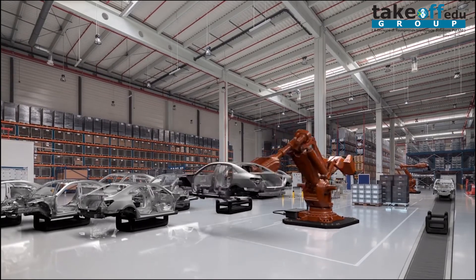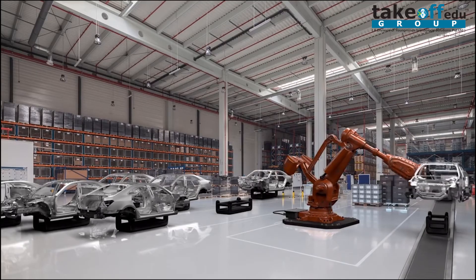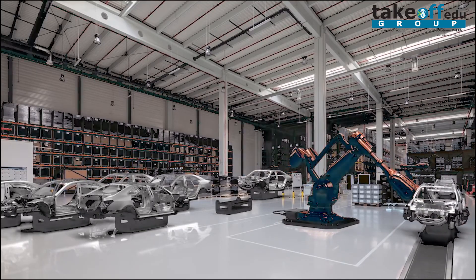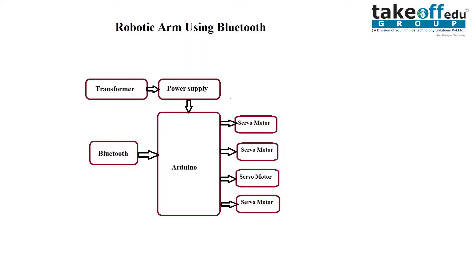It rotates more than two axes and picks the object and places it another side. Let us go to the block diagram.